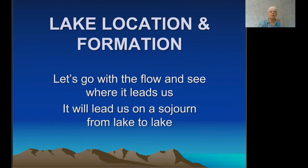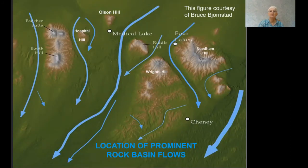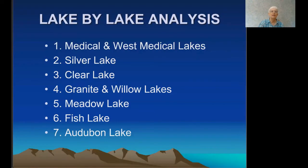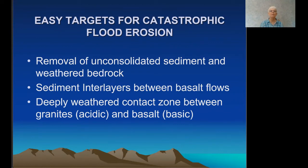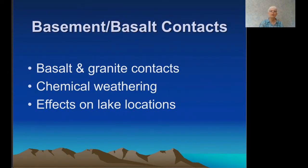So: lake formation and location — a sojourn from lake to lake. This figure courtesy of Bruce Bjornstadt shows the pattern of floodwater flows through the Steptoe region. Light blue arrows show the pattern of basin flow; flood-submerged areas are in green; emergent hills and ridgetops are in brown to white. Easy targets for catastrophic flood erosion include removal of unconsolidated sediment and weathered bedrock, sediment interlayers between basalt flows — as we saw at Williams Lake — and deeply weathered contact zones between granites (acidic rock) and basalt (basic rock). I will start with basalt-basement contacts.